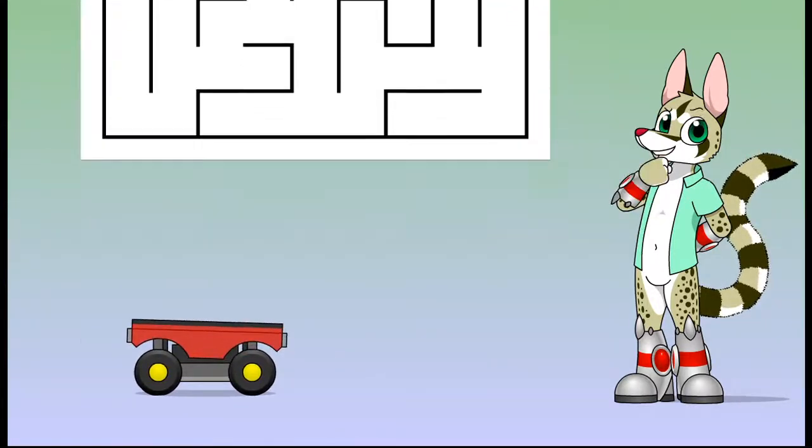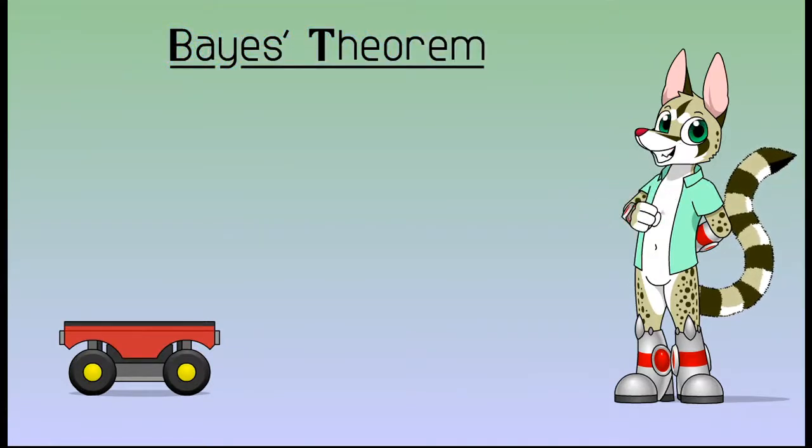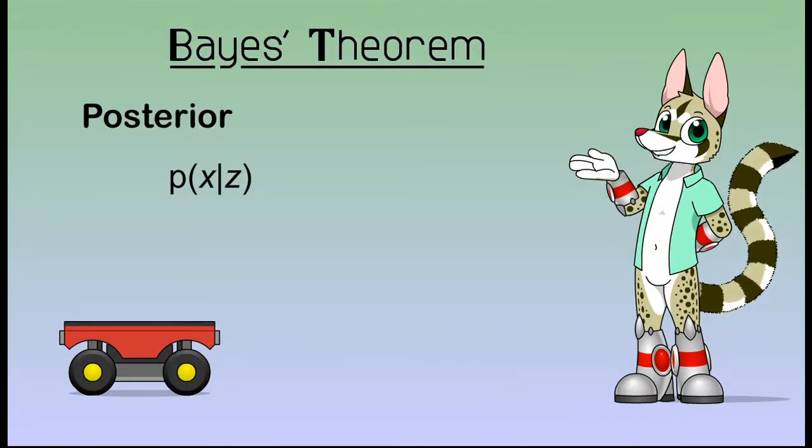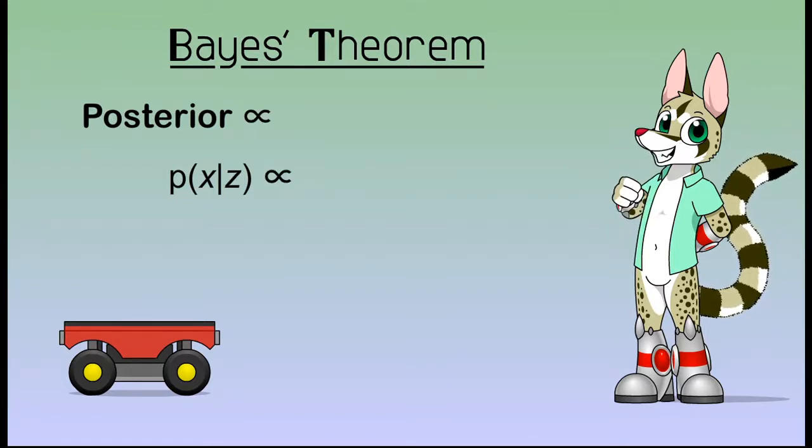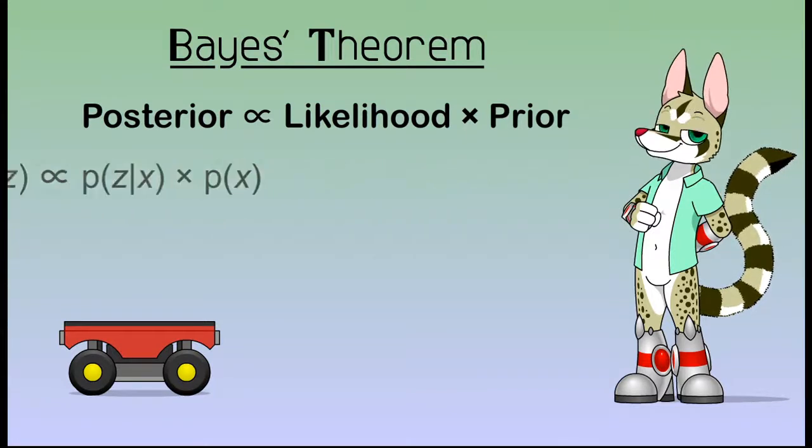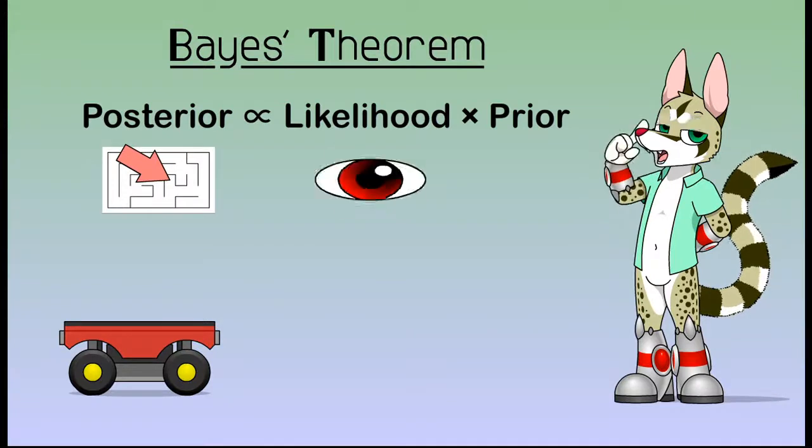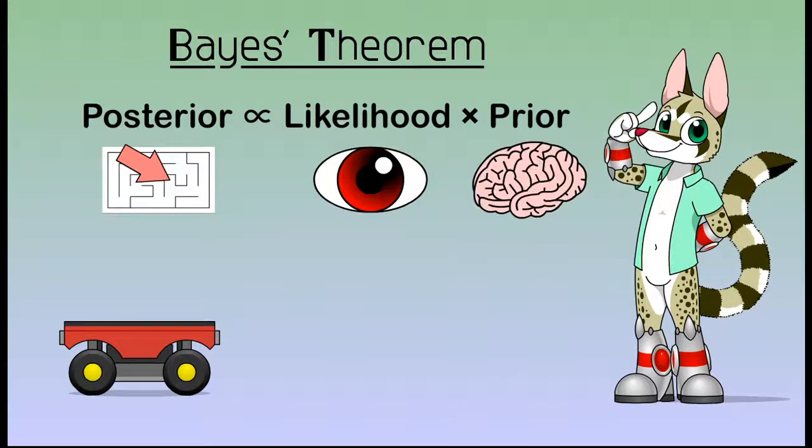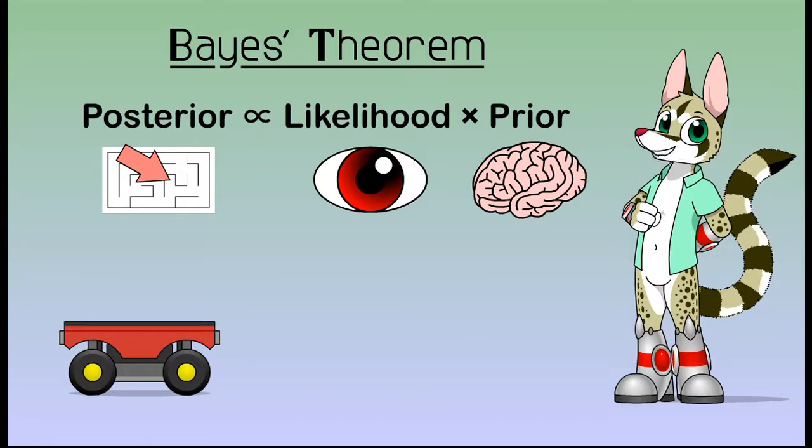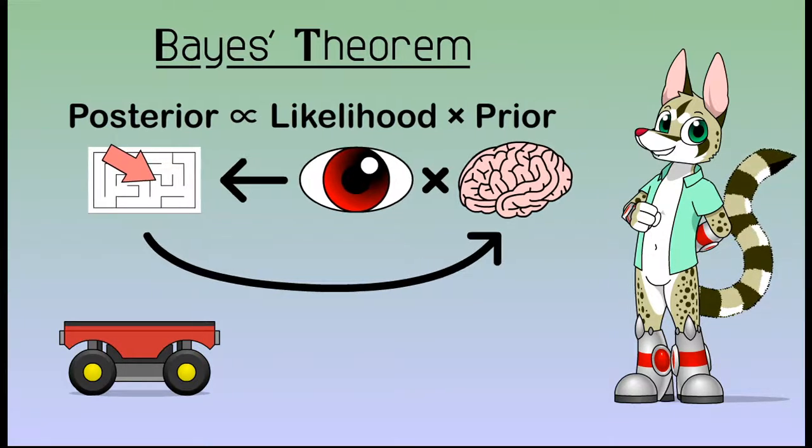Now, how do we teach a robot how to use a map? For that, we use Bayes' theorem. Bayes' theorem tells us that the posterior probability of an event is proportional to its likelihood times its prior probability. This, in human language, means that a robot can estimate where it is, from where it looks like it is, and where it makes sense that it is. This formula is usually applied sequentially, since knowing where the robot might be now determines where it will make sense for it to be in the future. But let us see how it works with an example.